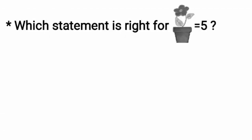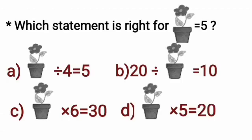Now, next question is, which statement is right for a flower pot? That is equal to 5. Means, the value of a flower pot is 5. Children, to find the correct answer, we will start from option A. 5 divided by 4. That is 1.25. This is not 5. That's why option A is incorrect.